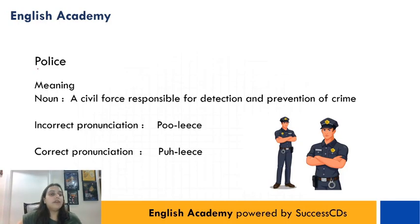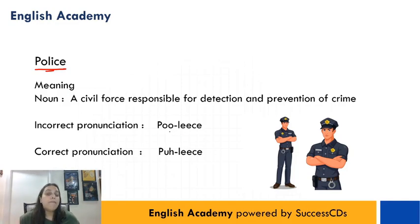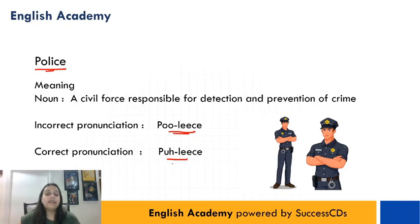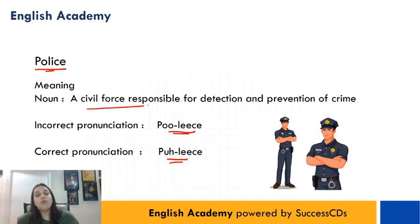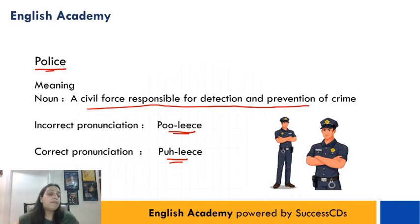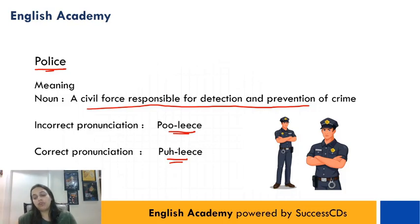The next word is P-O-L-I-C-E. Log usually isse pronounce karte hain 'police', but iski correct pronunciation is 'police'. Aur iska matlab hota hai a civil force responsible for detection and prevention of crime. Toh aapke jo officers crime ko prevent karte hain, woh 'police' officers hote hain, na ki 'police' officers.